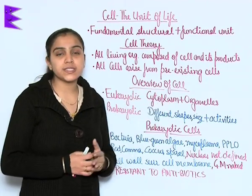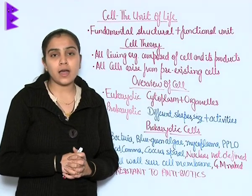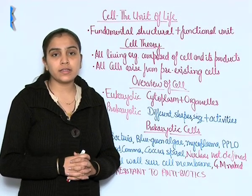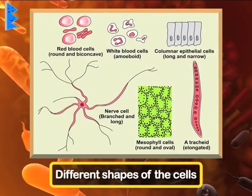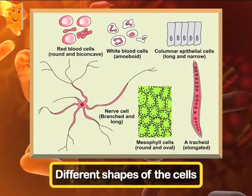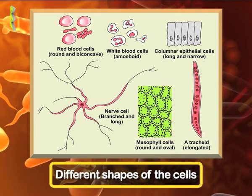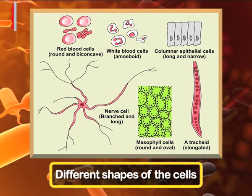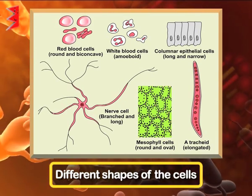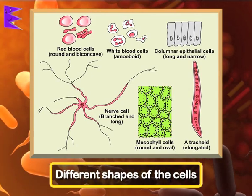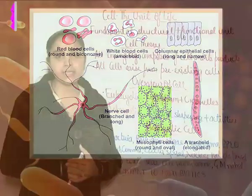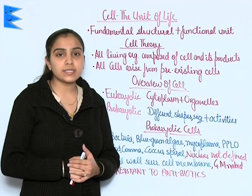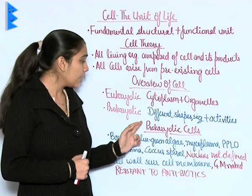Cells are majorly of two types. As you can see in the diagram, the various types of cells are broadly classified as eukaryotic cells and prokaryotic cells. Cells have cytoplasm as well as organelles in them, and they have different shapes, sizes, and activities, as shown in the diagram.